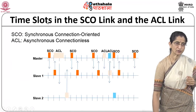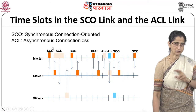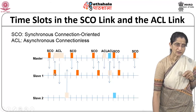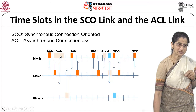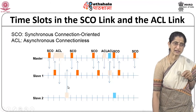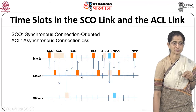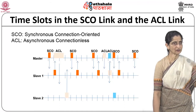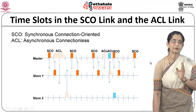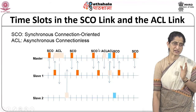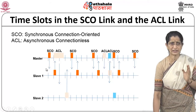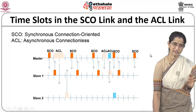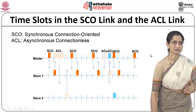An SCO slot and an ACL slot can be interleaved: the master sends an SCO and slave 1 responds; then the master sends an ACL to slave 2 and slave 2 responds; then master sends SCO again and slave 1 responds, and so on. The SCO occurs at a periodic rate since it is a synchronous connection-oriented channel, guaranteeing a slot for transmitting SCO data within a definite period of time.